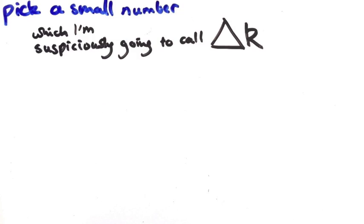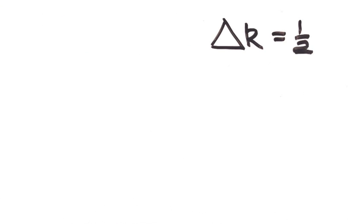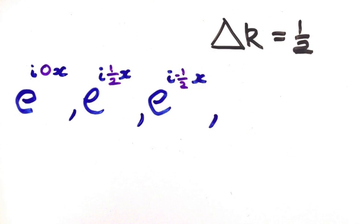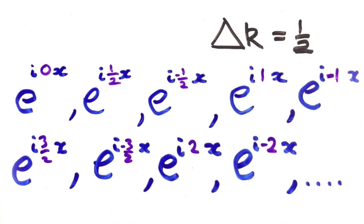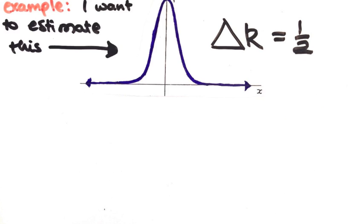First we pick a small number. Let's start with half. What we're going to do is get the best approximation we can to our function only using complex exponentials with k values that are multiples of half. Our task is to find the weights to put in front of each of these functions.